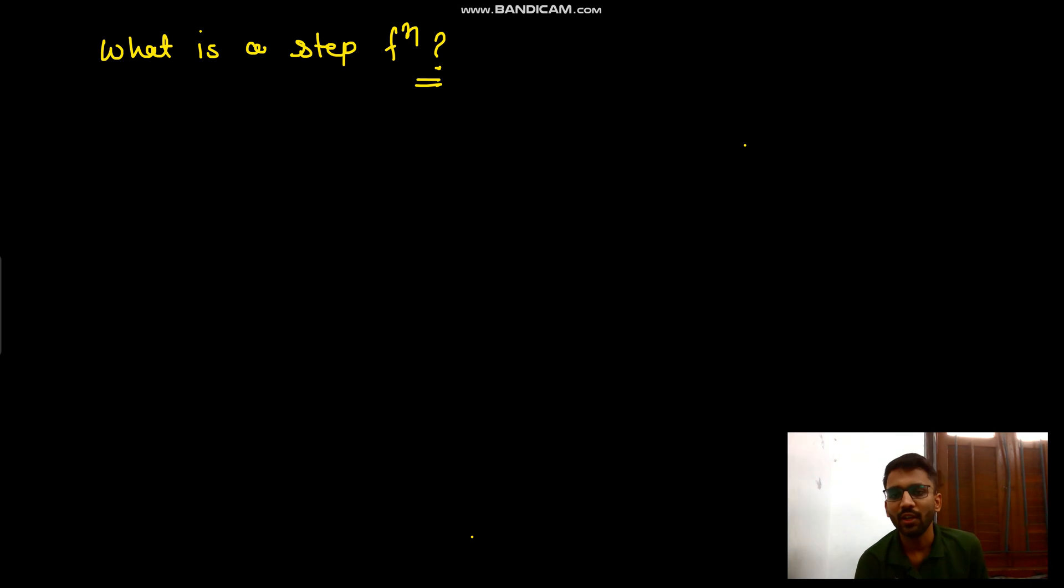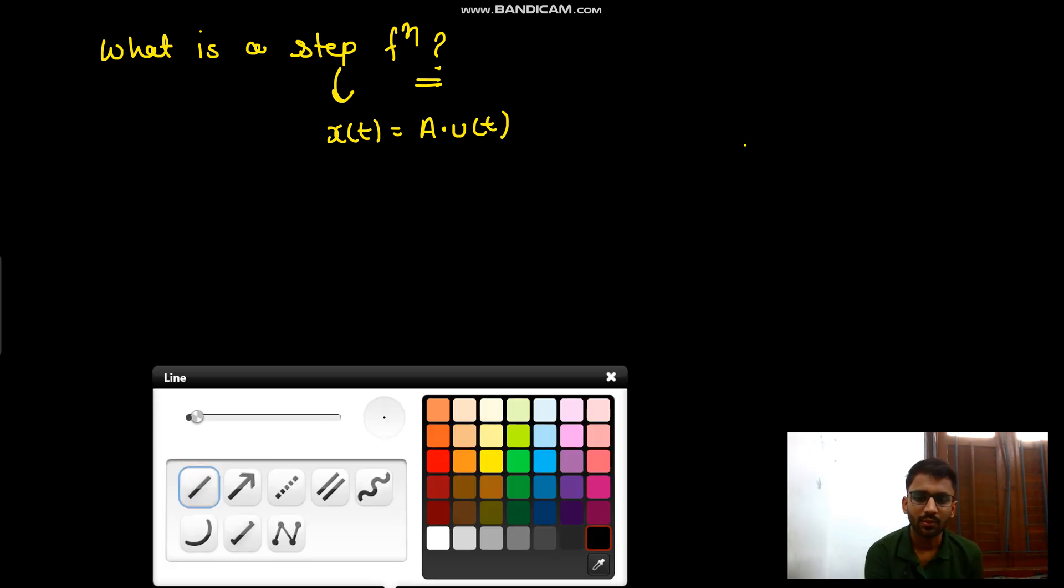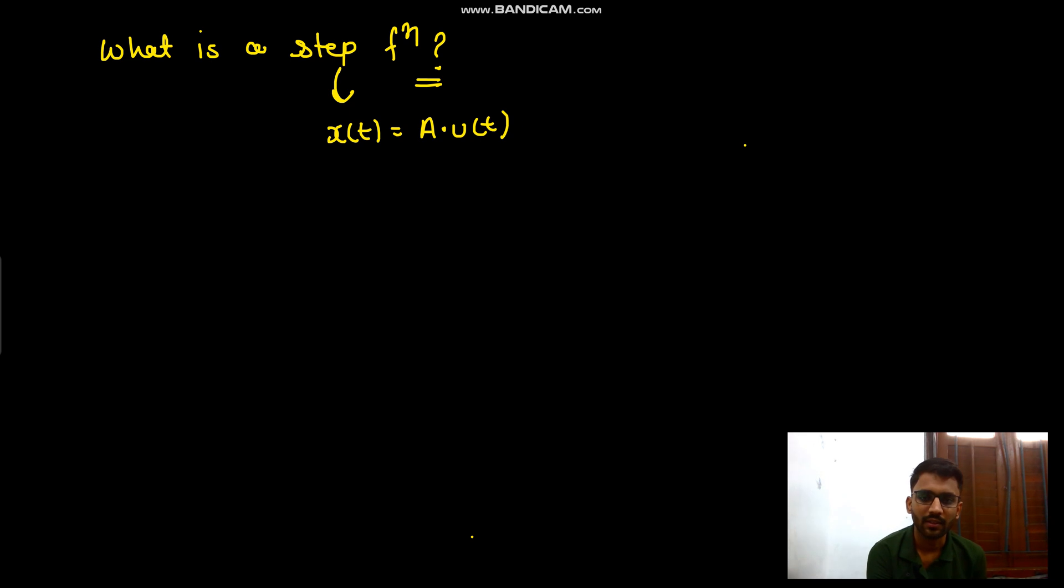Hello everyone, first we will see about the step function. I know most of you already know about it, but just watch the video till the end. What is the step function? Step function is A into u(t). What does that mean? It means you will have the value of A when t is greater than 0, and you will have value 0 when t is less than 0.